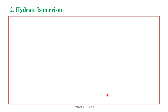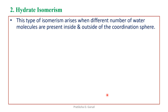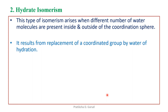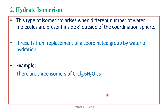The second type of structural isomerism is hydrate isomerism. This type arises when different numbers of water molecules are present inside and outside of the coordination sphere. It results from the replacement of coordinated groups by water of hydration — meaning the ligands are exchanged with water molecules.